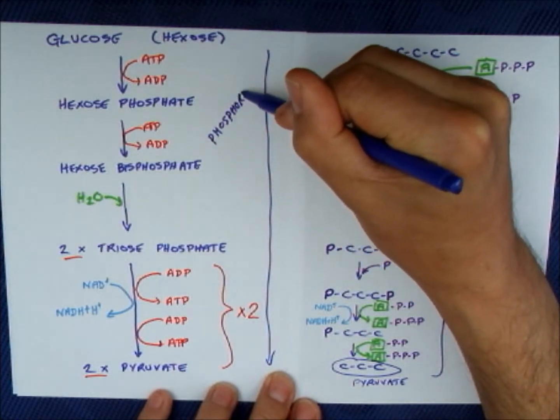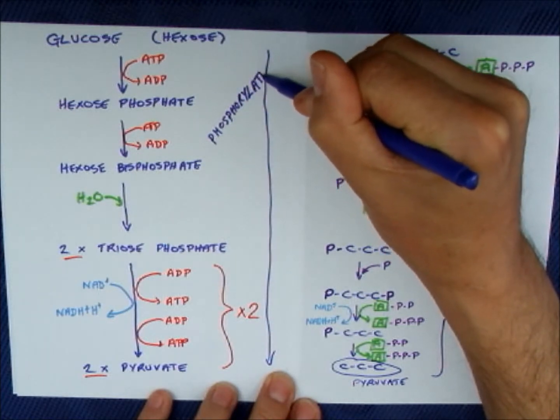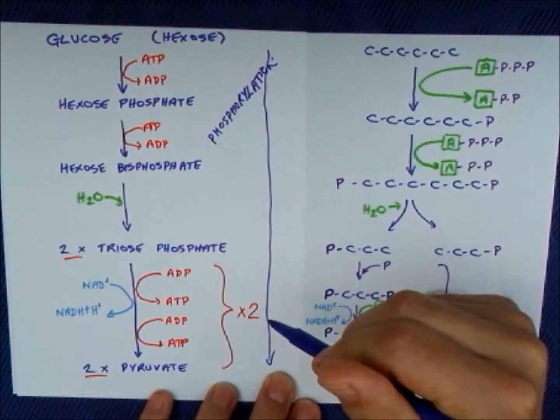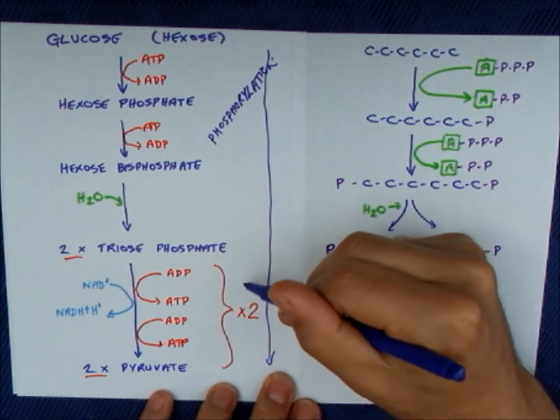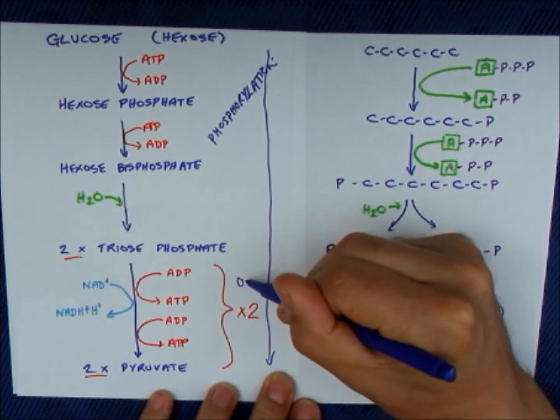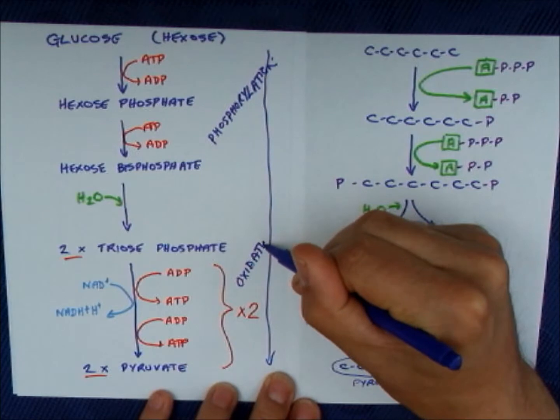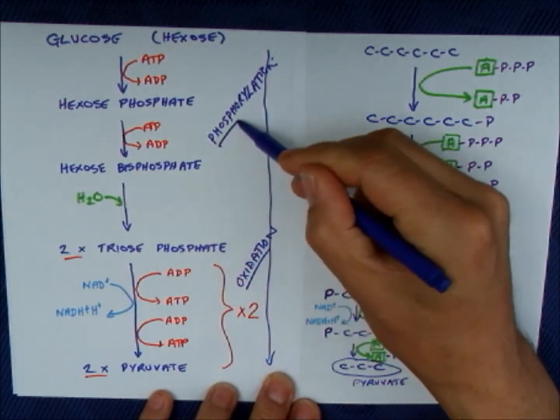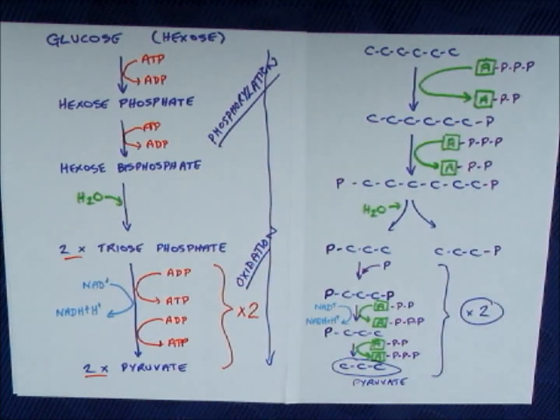Don't forget the two stages in glycolysis are phosphorylation initially. The phosphorylation allows the lysis reaction to happen at a low enough energy level. Then oxidation.